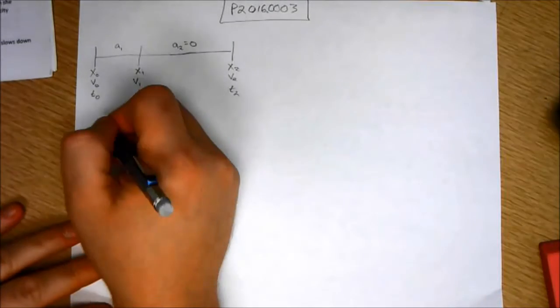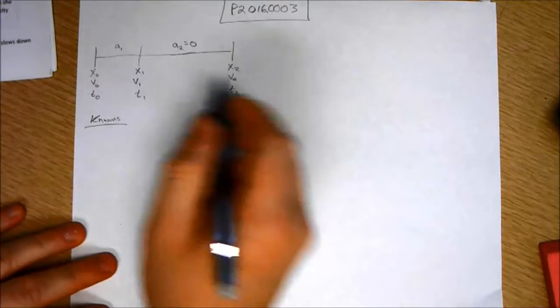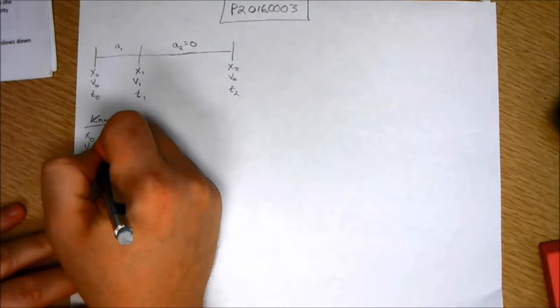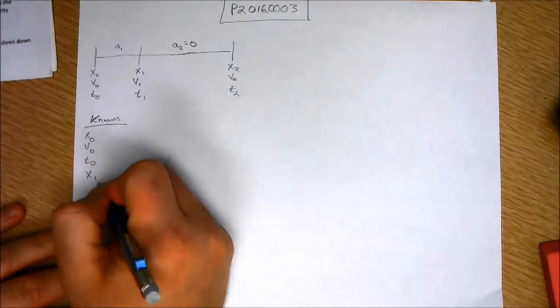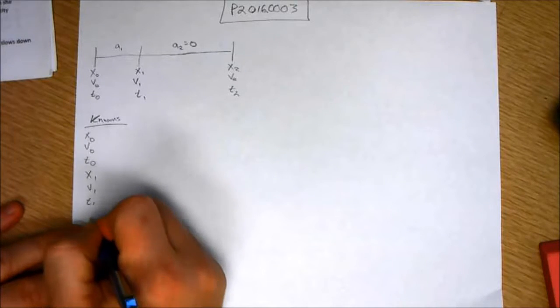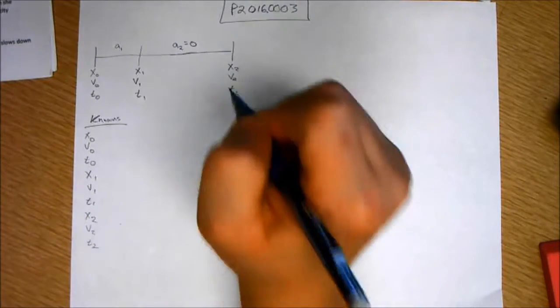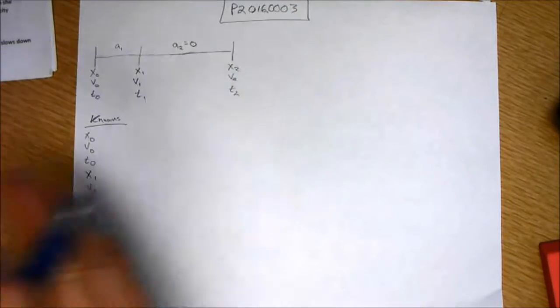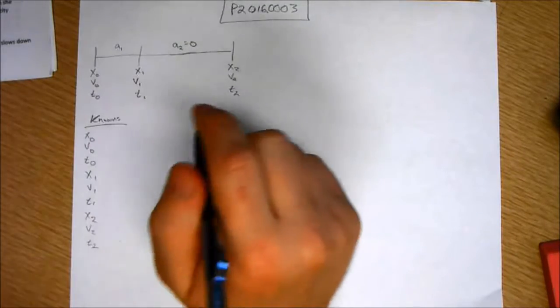So what I'll do now is I'll just list out my known variables: v0, t0, x1, v1, t1, x2, v2, t2. I know this is cumbersome doing all this, but I think if you do everything explicitly, you can make sure you don't miss anything from the problem.